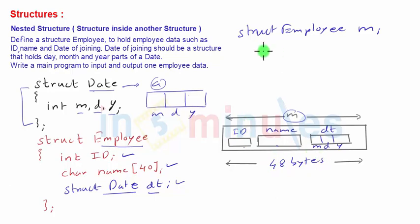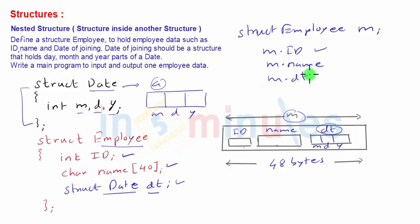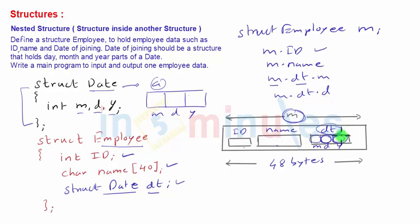To access ID, we write m.id. To perform any operation on name, we write m.name. To perform any operation on dt, we write m.dt — but dt itself is a structure, and a structure is of no use directly for data input/output; we need to access its members d, m, and y. To access month for dt, which is itself a member of m, we write m.dt.m. To access day, we write m.dt.d, and to access year, we write m.dt.y.